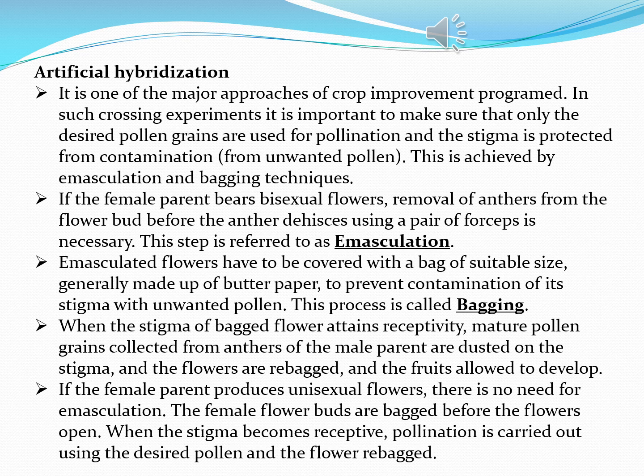To summarize: first is emasculation — removal of the anther; second is bagging — covering the flower with butter paper. When the stigma of the bagged flower attains receptivity, mature pollen grains are transferred and dusted on the stigma, and then the flower is re-bagged and allowed for further development.